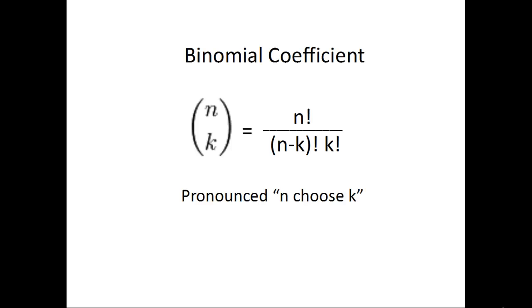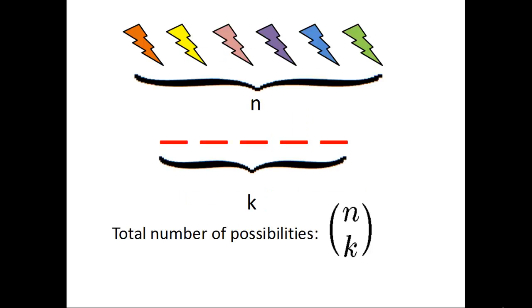As a reminder, the binomial coefficient, pronounced n choose k, equals n factorial divided by n minus k factorial k factorial, and it represents the total number of possibilities to choose k objects from n total objects if the order of the objects that we choose does not matter.